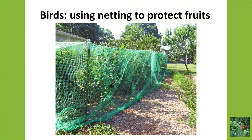We also used netting over a young peach tree belonging to some friends. Squirrels would come and eat the peaches every late summer, so we put netting over the top and fastened it at the bottom. Once the peaches were getting really ripe, they opened it up and picked all their peaches - it was the first year they got to eat some of the peaches because the squirrels didn't get them. Netting can be really useful.